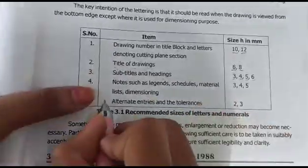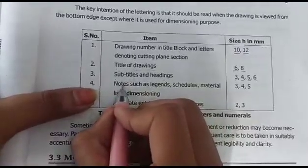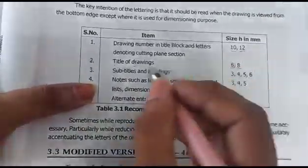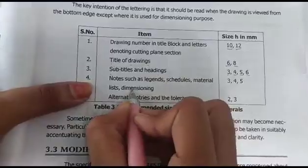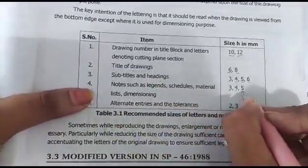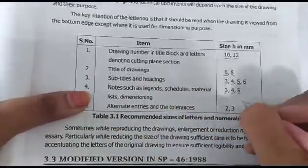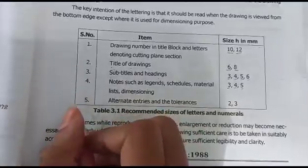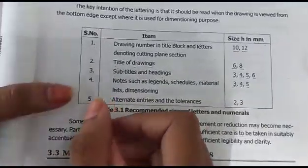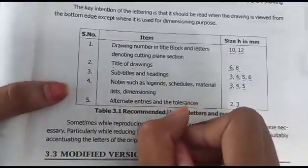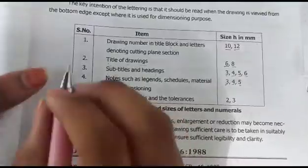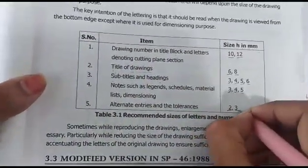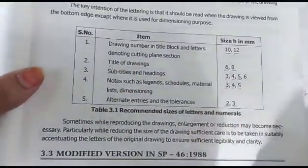For notes and dimensions, we will take a height of 3, 4, or 5 mm. For alternatives, entries, or tolerances, we will take 2 mm, not 3 mm, to denote the height.